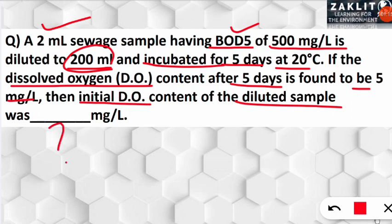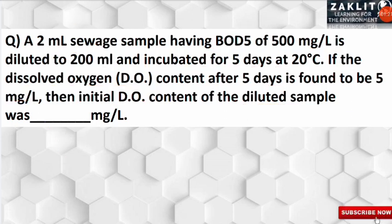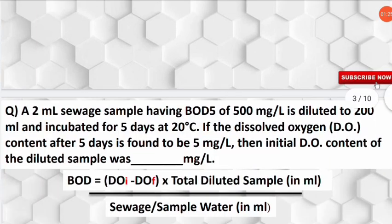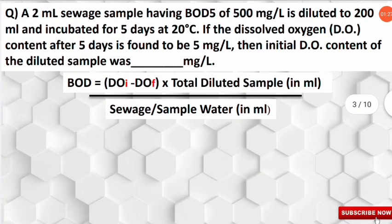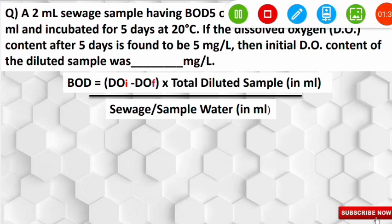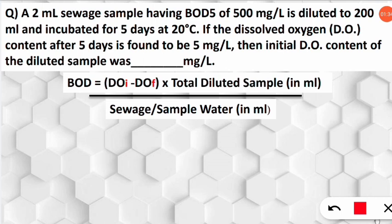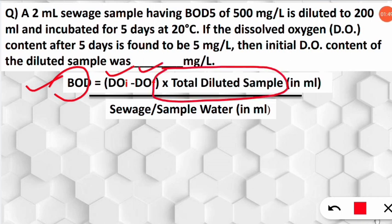The question is asking for the initial DO. There is a very simple formula — we will see how to solve these kinds of questions within seconds. This is the key formula, and with its help you will be able to solve these questions very easily. The formula to find the biochemical oxygen demand (BOD) of a water sample is: BOD = (dissolved oxygen initial − dissolved oxygen final) × total diluted sample volume ÷ sewage or sample water volume taken.